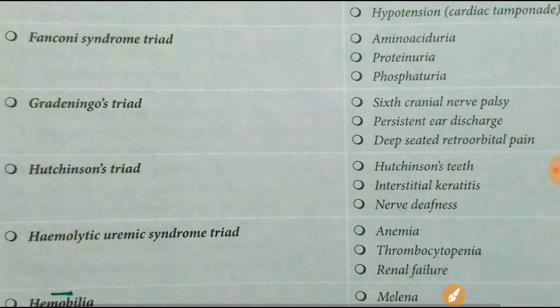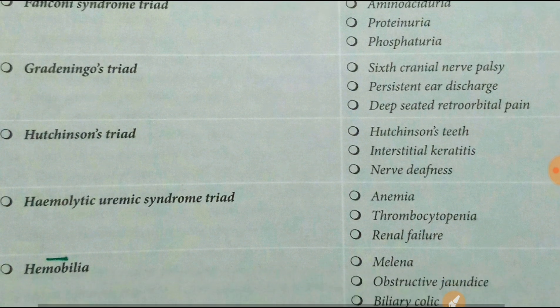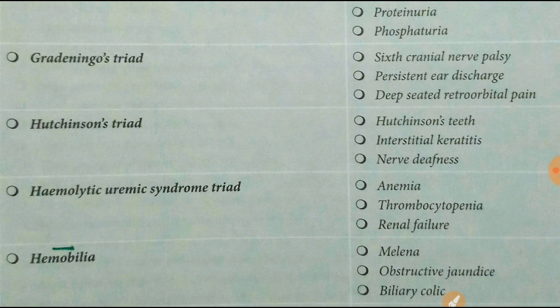Gradenigo's triad is: sixth cranial nerve palsy, persistent ear discharge, and deep-seated retro-orbital pain. So persistent ear discharge, retro-orbital pain, and sixth nerve palsy are the three features of Gradenigo's syndrome.